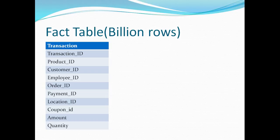Then we have these three columns that are in question: Payment ID, Location ID, and Coupon ID. Payment ID is how the payment was made, whether it was made with card or cash. Location is in-store or online, and whether a coupon was used. And then we have two measures which are amount and quantity.